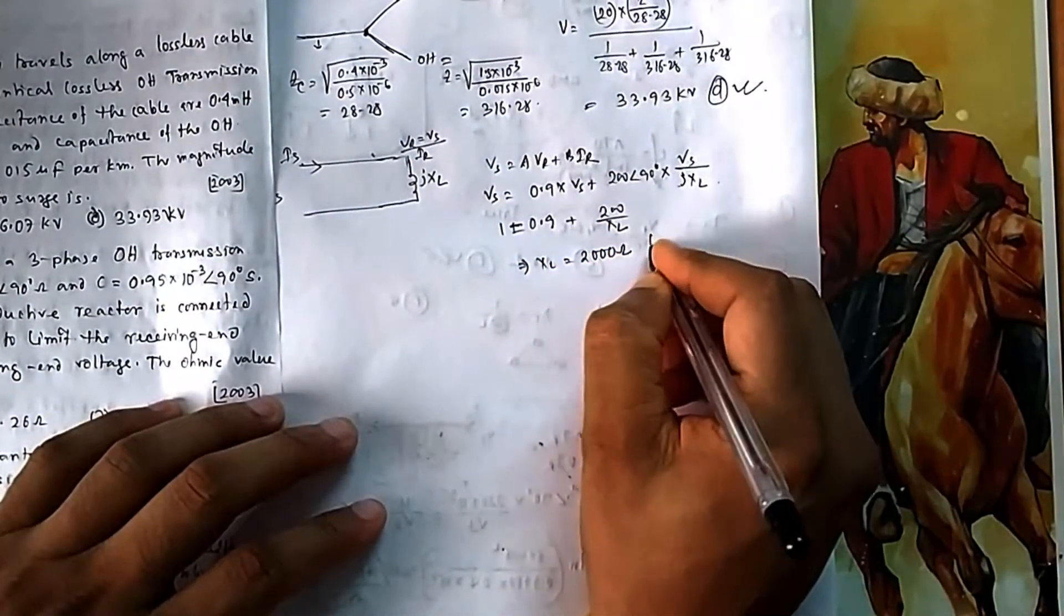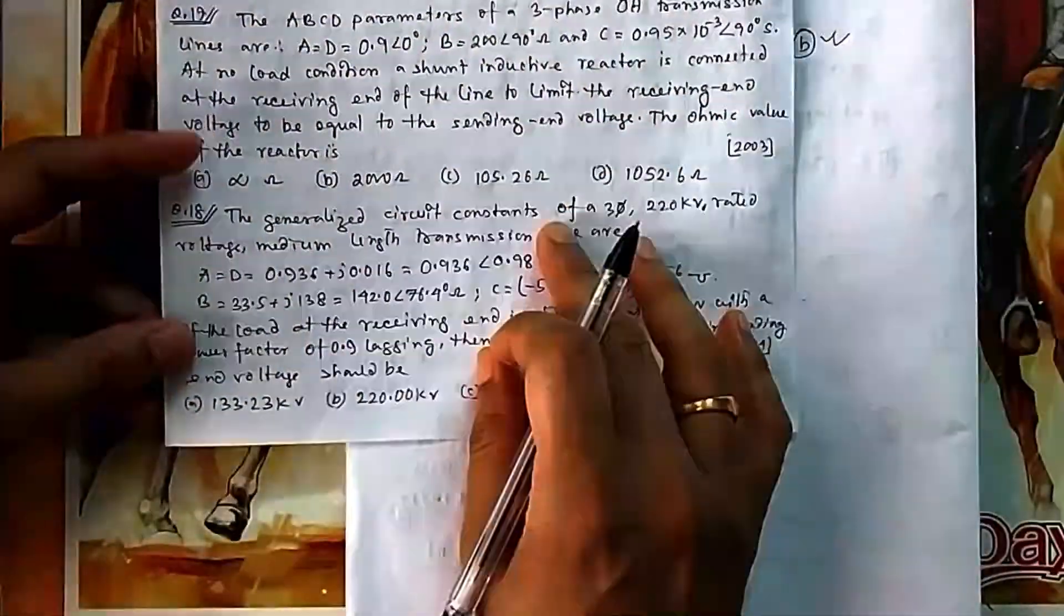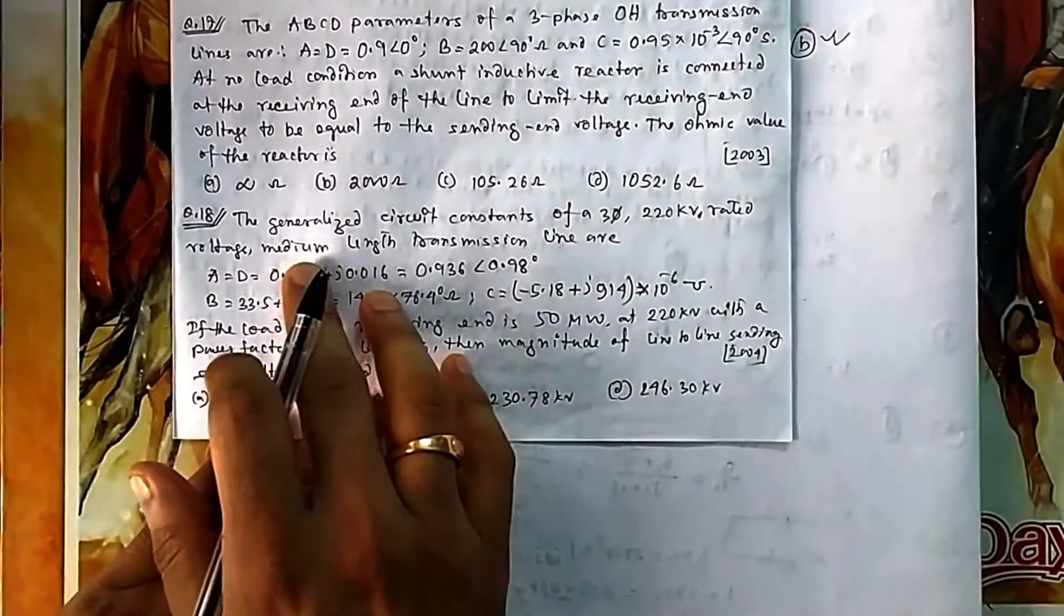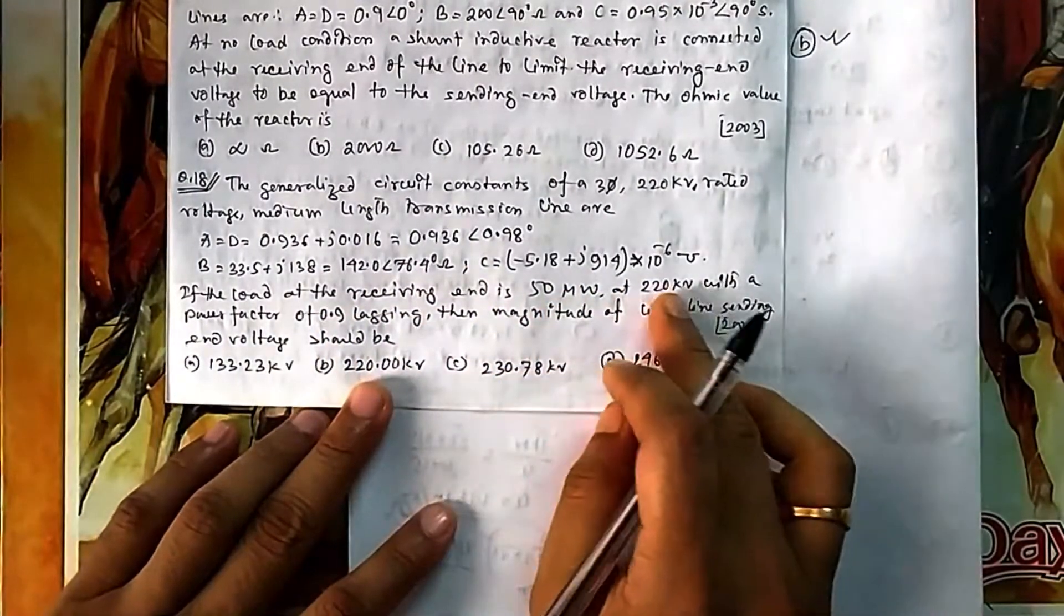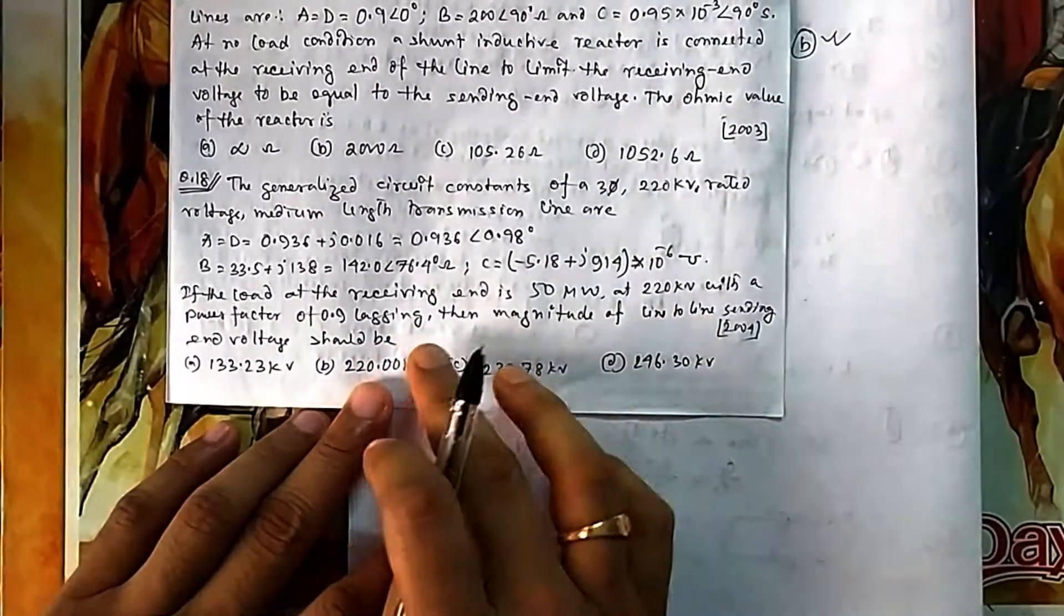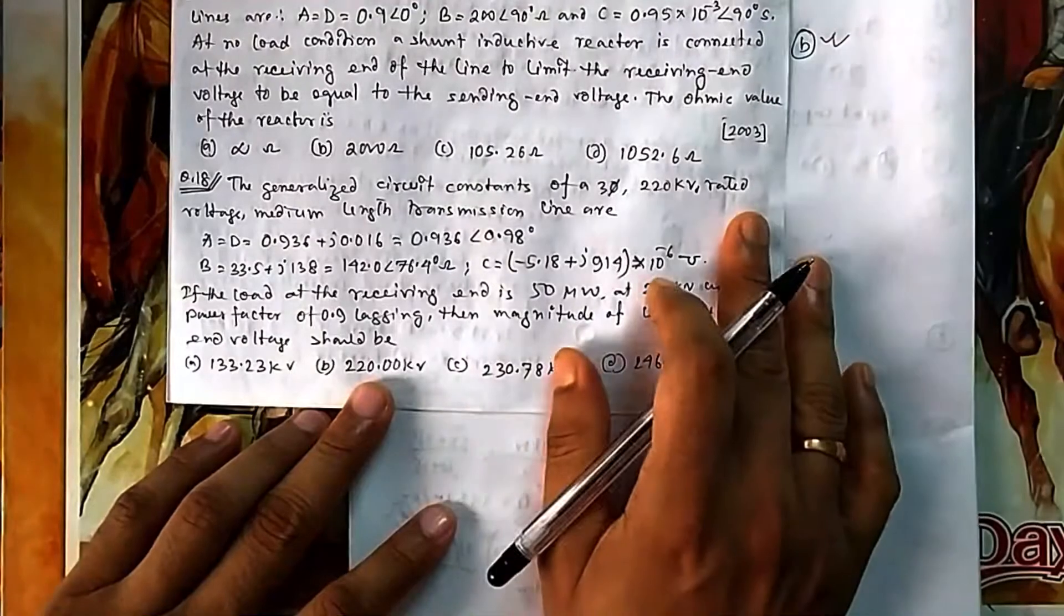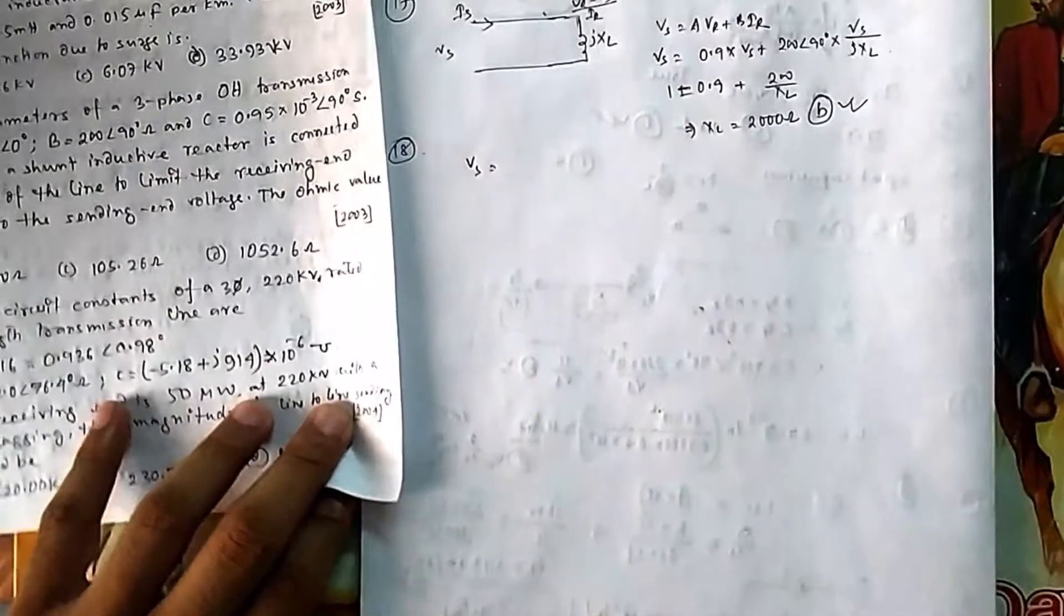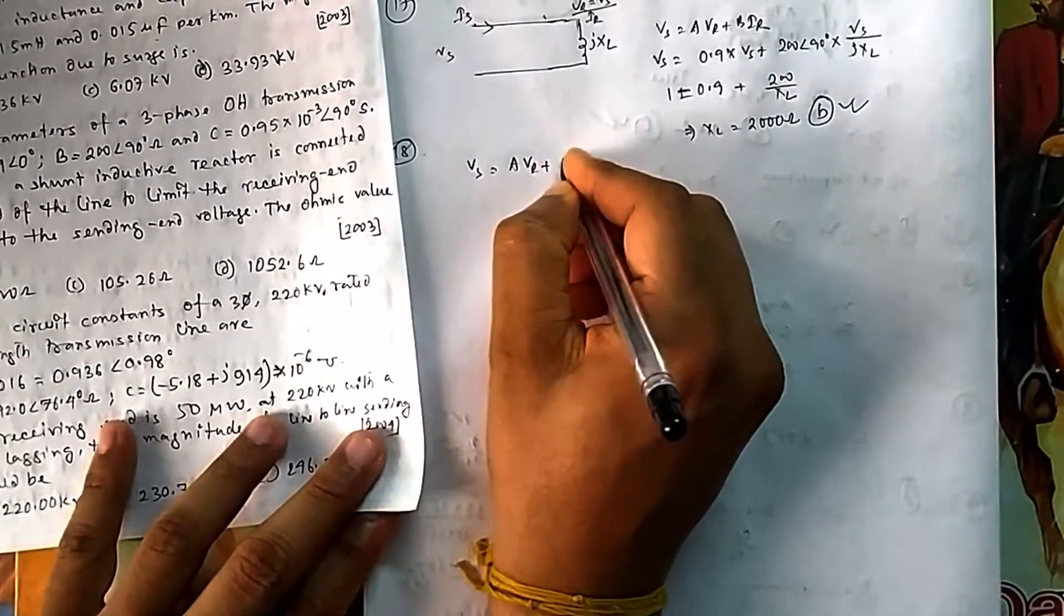Question 18: A generalized circuit constant of a 220 kV rated medium length transmission line ABCD are given. If the load at the receiving end is at 220 kV with a given power factor, find the magnitude of line-to-line sending end voltage. You have to be very careful - these formulas are for per-phase values.